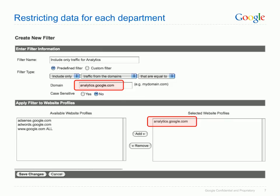Having duplicated your profiles, the next step is to ensure that they track the relevant data. Currently, all of the profiles we have created share the same code, and as such are tracking the same data. This screenshot shows the predefined filter for restricting data in the analytics.google.com profile, to include data only from visitors that land on analytics.google.com. Be sure to enter the relevant domain in the Domain field, and to select the correct profile to add the filter to. More in-depth details can be found in the Analytics Help Centre.